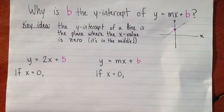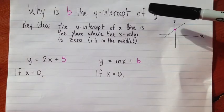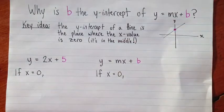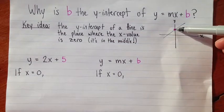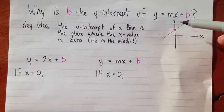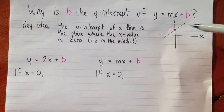So there's a key idea when we're considering this question: Why is b the y-intercept of y equals mx plus b? And the key idea is that the y-intercept of a line is the place on the line where the x-value is zero. And this is actually a really simple idea. The y-intercept is in the middle. It's not over here where x is positive, not over here where x is negative. It's right in the middle where the x-value is zero.